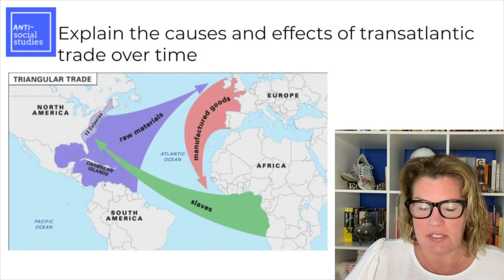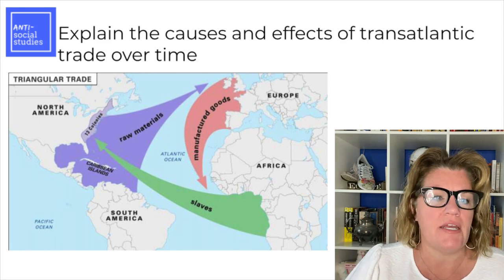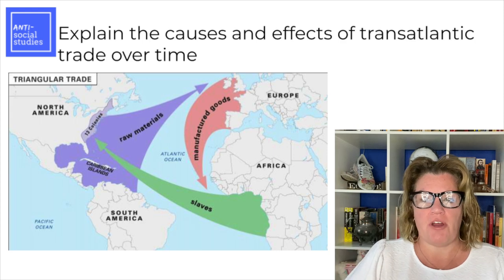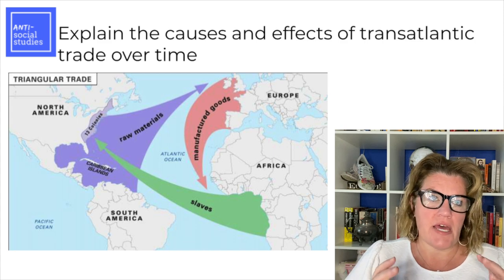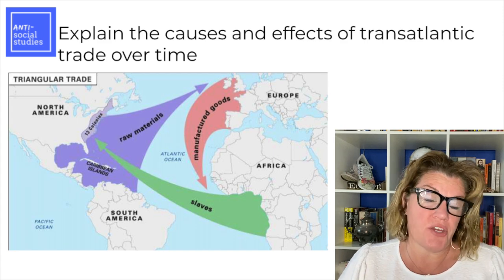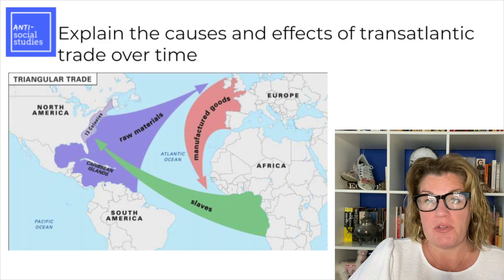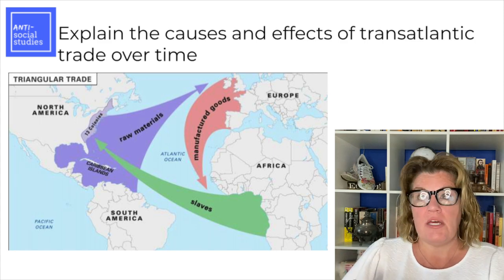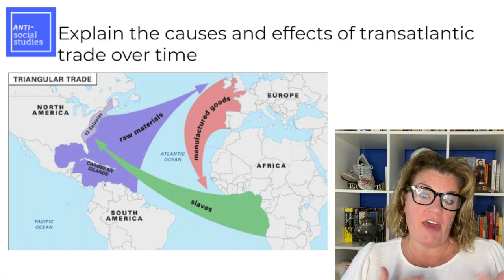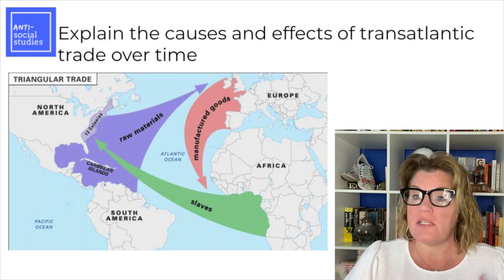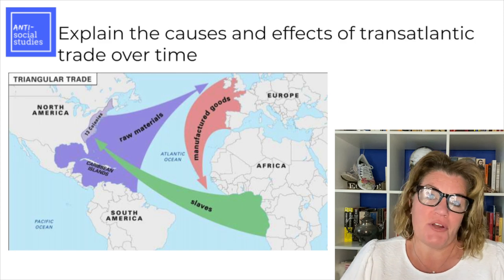The transatlantic trade system — also called triangular trade — was essentially a network of trade from Europe to Africa to the New World. Europe sold manufactured goods, in many cases guns, and traded those for slaves in Africa. Those slaves were shipped to the New World where they were sold for raw materials. That's how we get this huge population of African slaves in North America — driven by this trade network and, going back to the cause of all of this, the money.